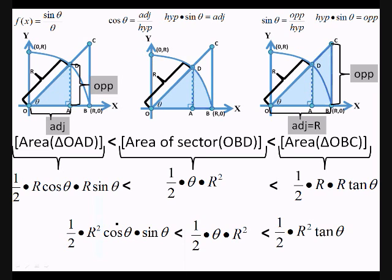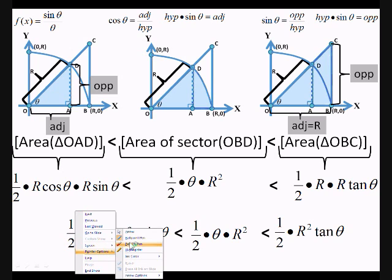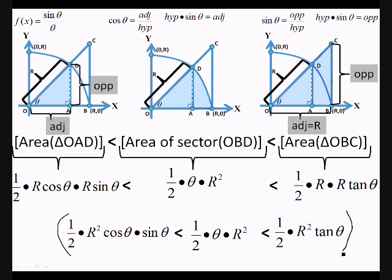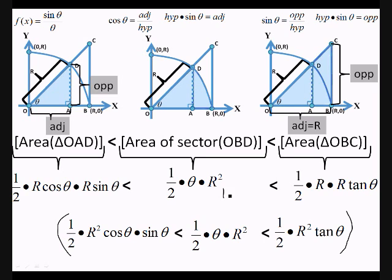Now we can treat this like normal algebra. Let's start trying to eliminate things. We can do something to each of these values — if you have 1 less than 2 less than 3 and multiply all values by 2, you get 2 less than 4 less than 6. As long as you do the same thing on both sides, the statements remain true. So we can multiply everything by 2 to get rid of the one halves, and also multiply by one over R squared to get rid of the R squared terms.